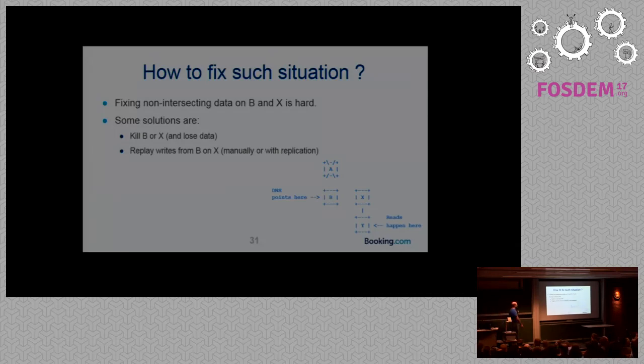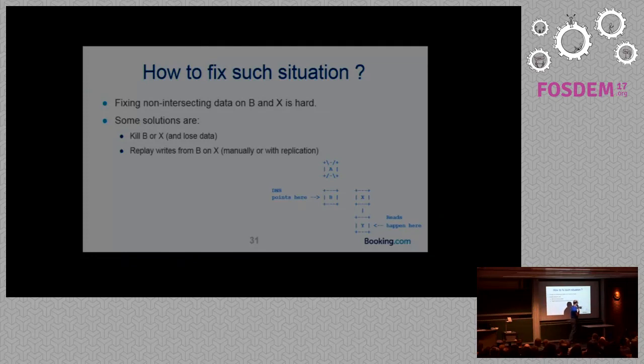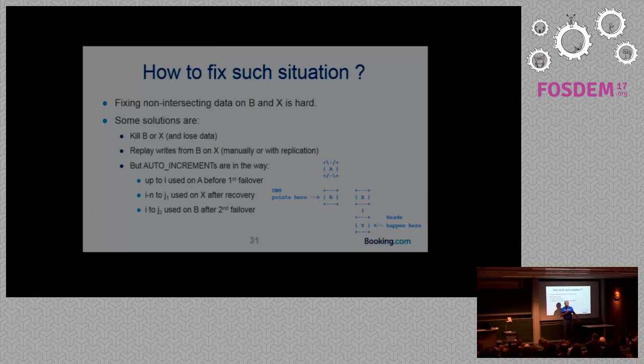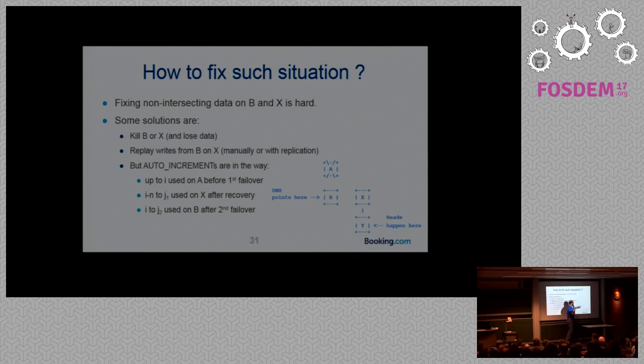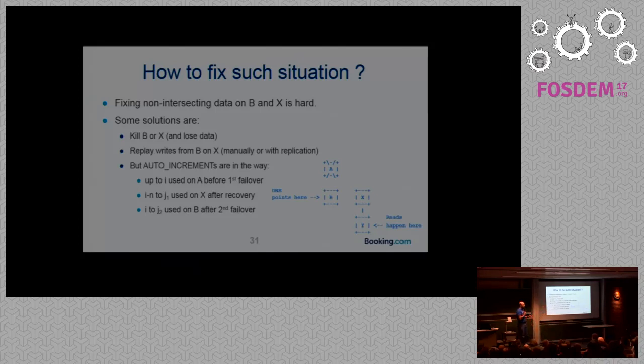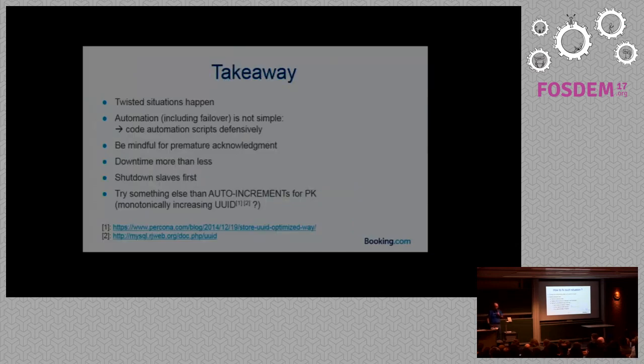Replication, we could have used replication. We could have put replication here. But at that point we got auto-increment in our way because when we failed over, some auto-increments were consumed on X, and when the DNS was pointed back to B, the same auto-increments were allocated to rows. So we had conflicting auto-increments. And that made me think, we use auto-increment all the time, but is this a good thing? Shouldn't we use another type of ID?